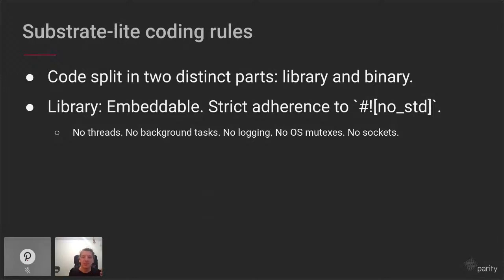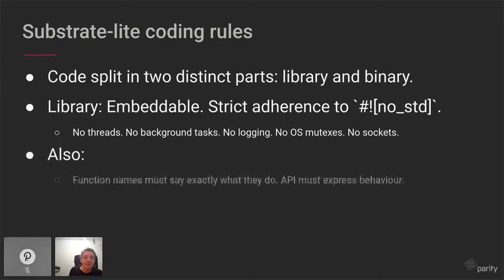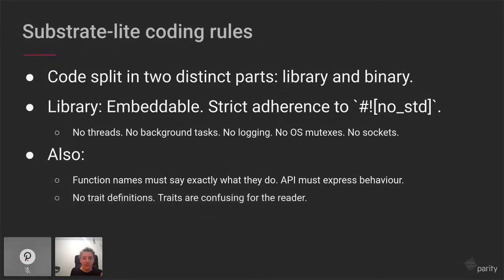In addition, function names must say exactly what they do. We don't have any function that says 'process' or 'update' or 'do things.' When you have a function, it must say exactly what it does — for instance, 'run one block' — so you know when you call it, it does exactly that, not more. It doesn't spawn anything in the background, no hidden effects. There are also no trait definitions, because traits are confusing for the reader. In the entire code base, there isn't a single trait definition.